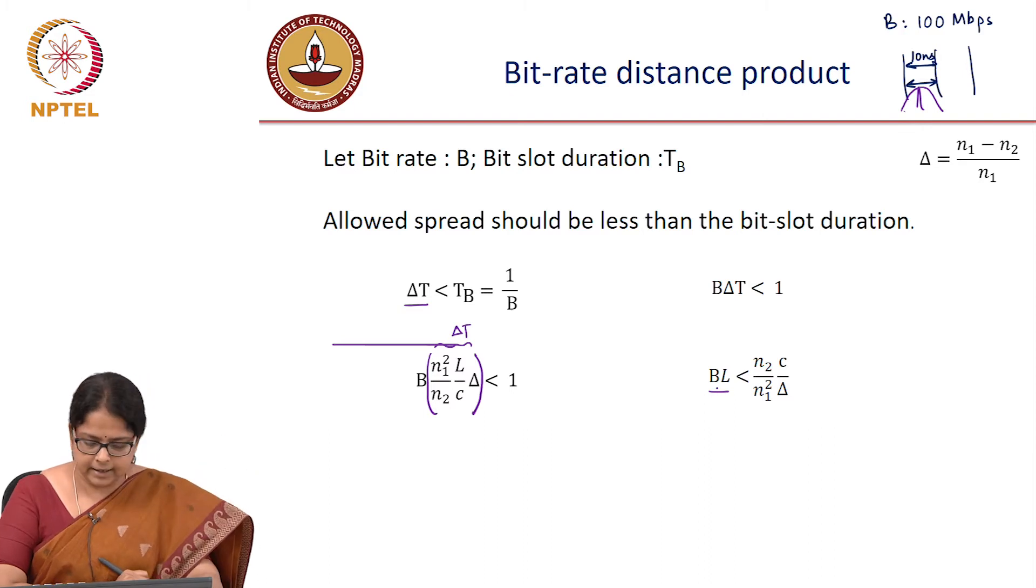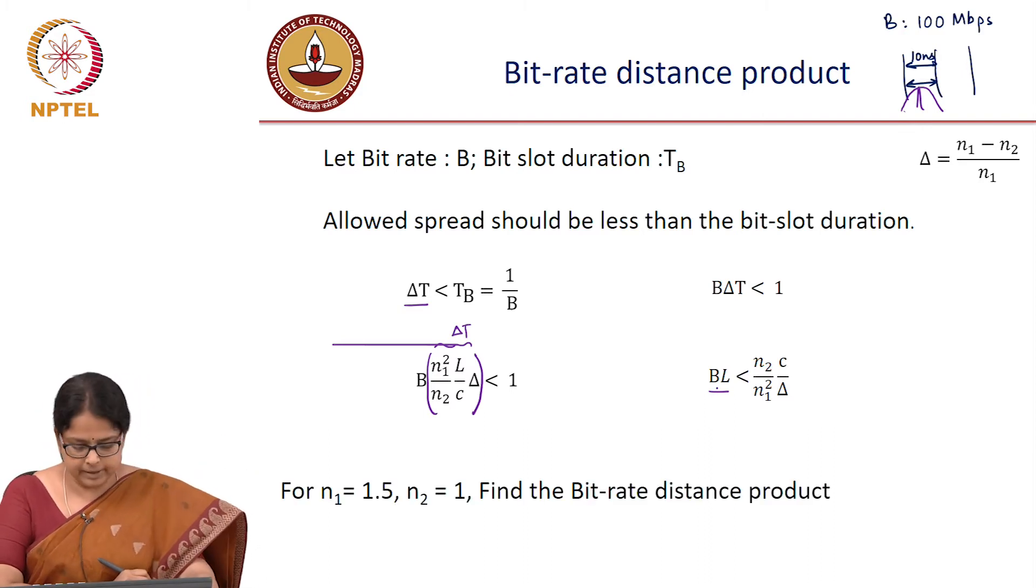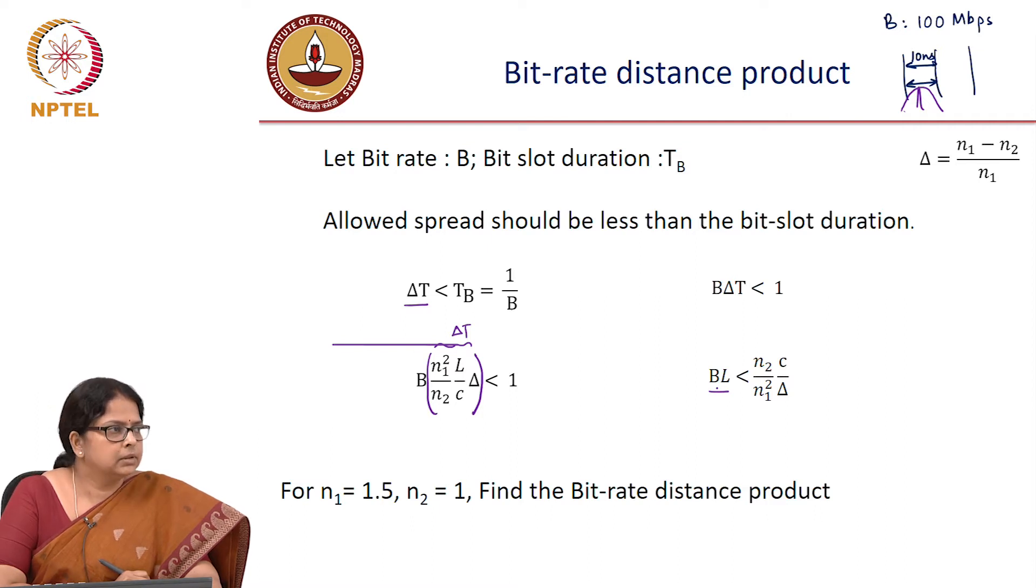Let us do a calculation. Let us take a fiber, N1 is 1.5, N2 is 1. And what is this product now? Can you calculate this bit rate distance product?